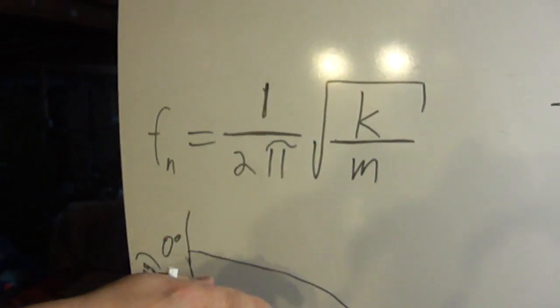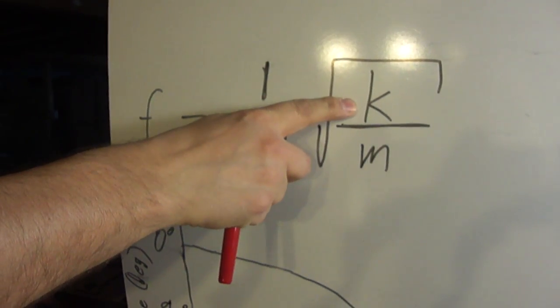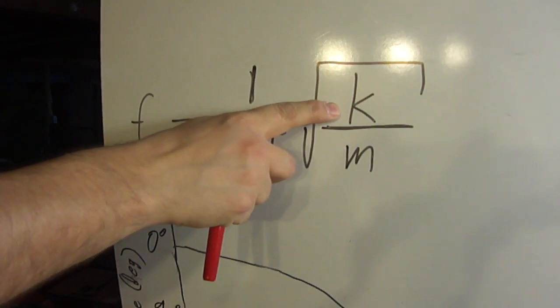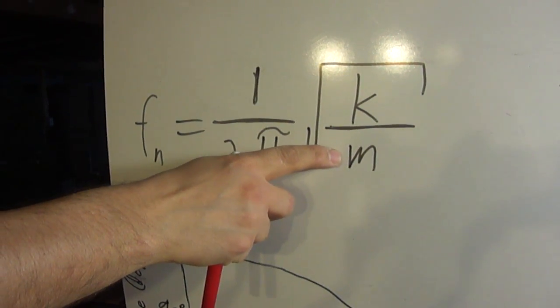So what I found was I was working this equation here. The natural frequency of the system is directly proportional to K, the spring stiffness, and the mass of the weight on the end of the spring.